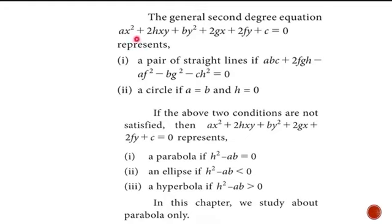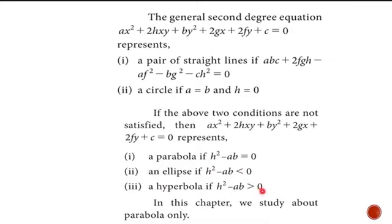The general second degree equation: if a is equal to b, it is a circle. If h² minus ab equals 0, it is a parabola. If h² minus ab is less than 0, we get an ellipse. If h² minus ab is greater than 0, it is a hyperbola. In this chapter, we are going to study about parabola only.